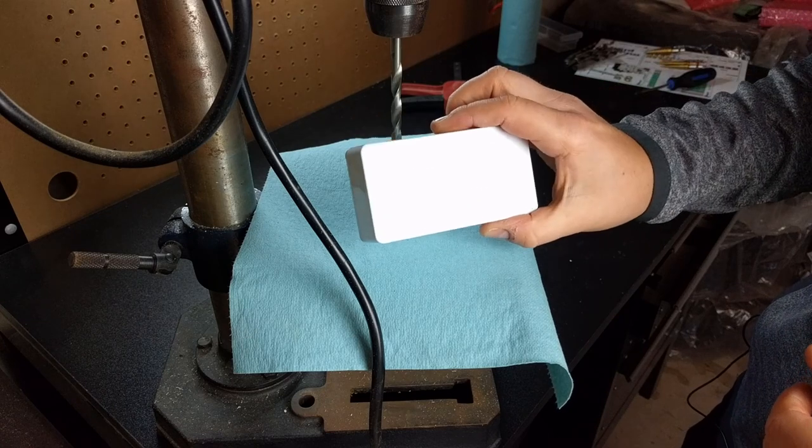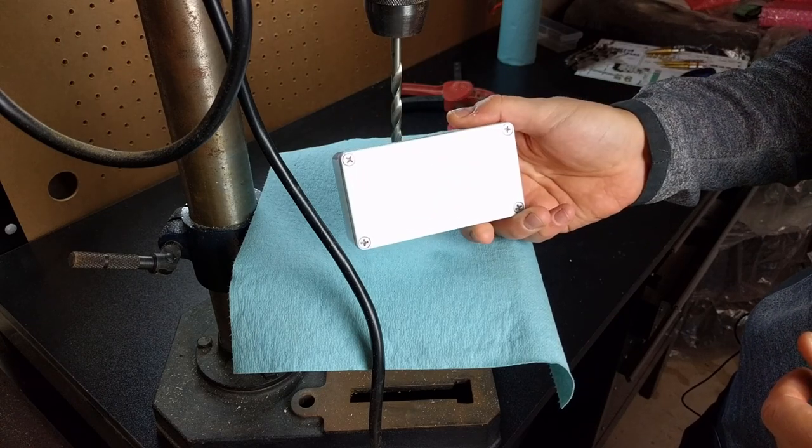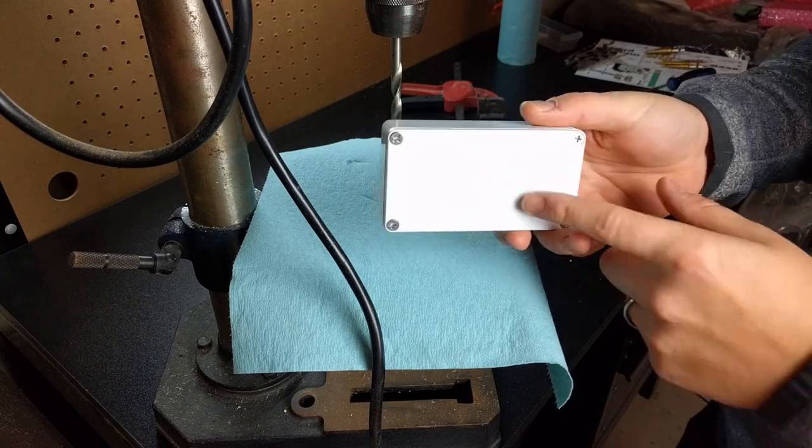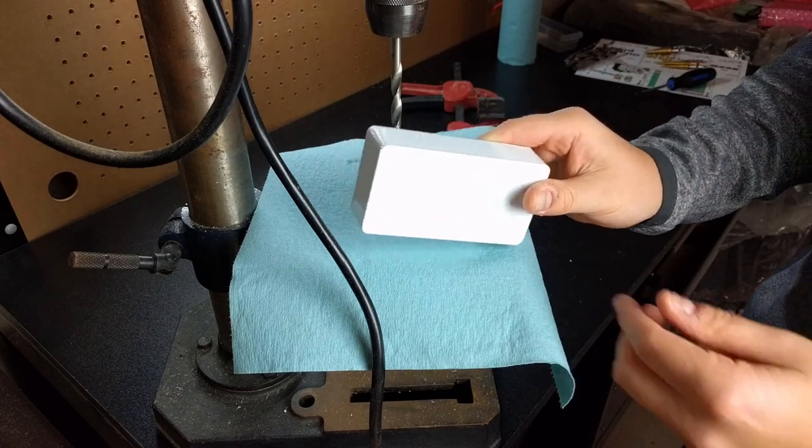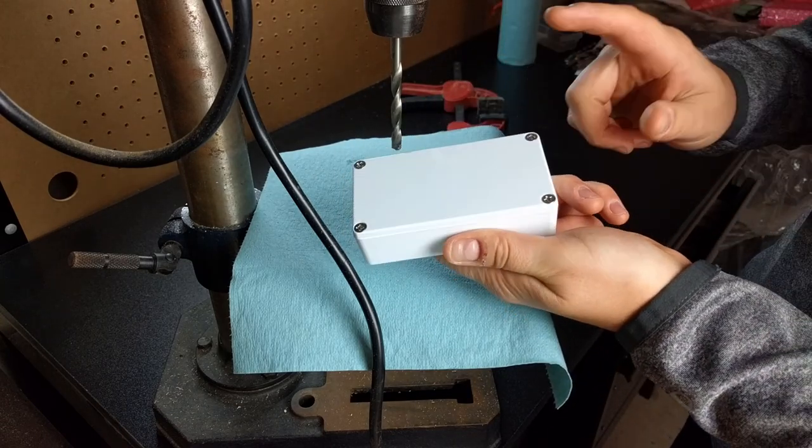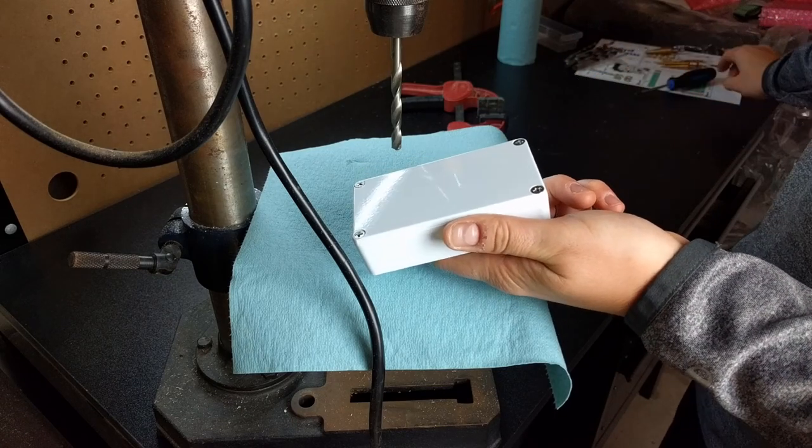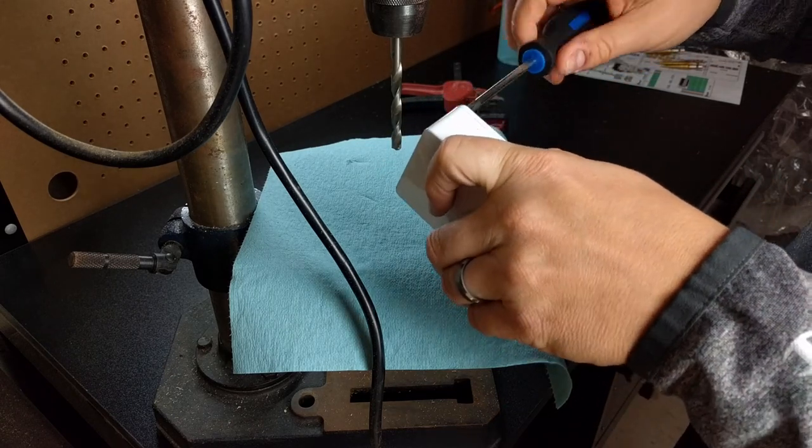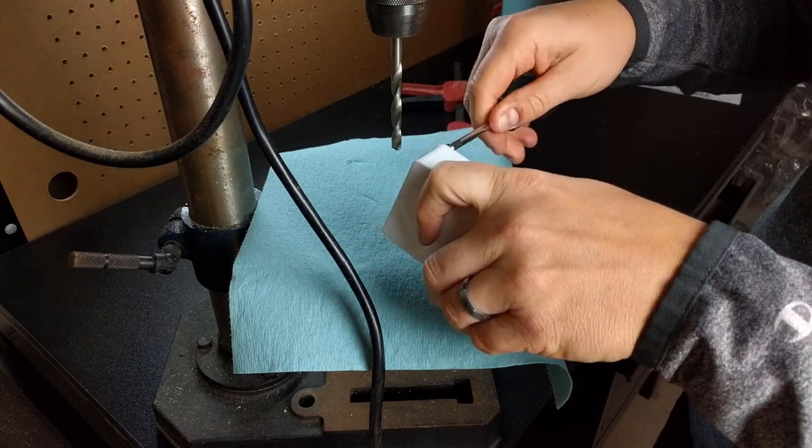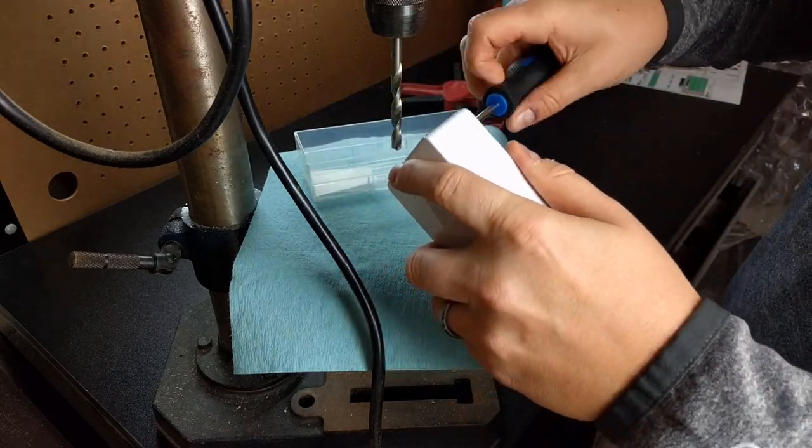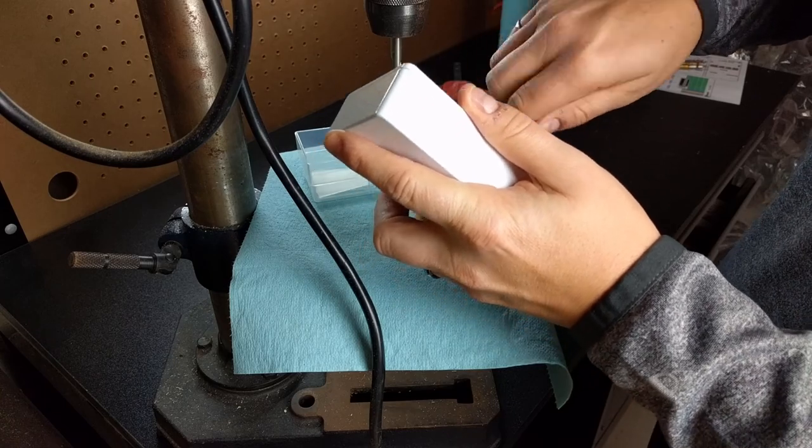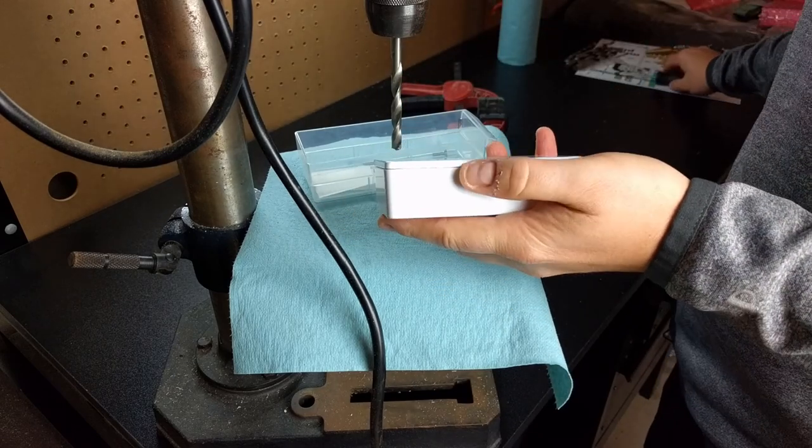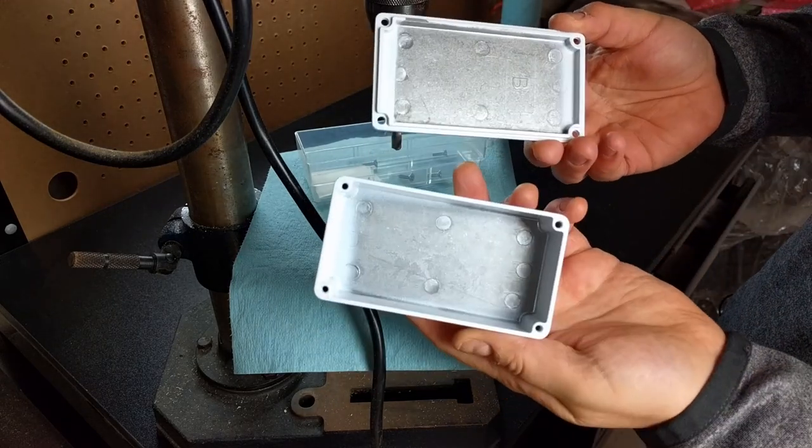So before we get started, this is the 1590B case that I would normally get from my online supplier, which is Tayda Electronics. I'll put the link down below. They come powder coated, I order all mine in white. They also come with the screws in there, so the first thing we got to do is actually take these screws out.